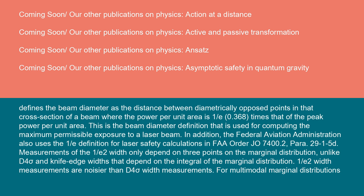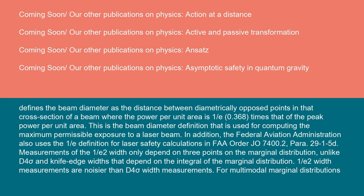Measurements of the 1/e² width only depend on three points on the marginal distribution, unlike D4 sigma and knife edge widths that depend on the integral of the marginal distribution. 1/e² width measurements are noisier than D4 sigma width measurements. For multimodal marginal distributions, a beam profile with multiple peaks, the 1/e² width usually does not yield a meaningful value and can grossly underestimate the inherent width of the beam. For multimodal distributions, the D4 sigma width is a better choice.